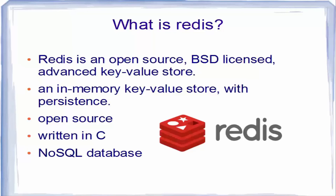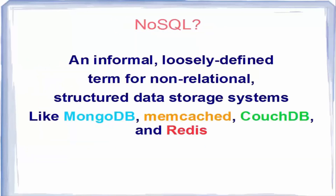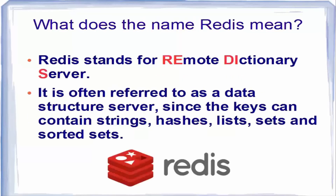Redis is written in C and it's a NoSQL database. NoSQL is an informal, loosely defined term for non-relational structured data storage systems like MongoDB, Memcached, CouchDB, or Cassandra. Redis allows the user to store vast amounts of data without the limits of relational databases.